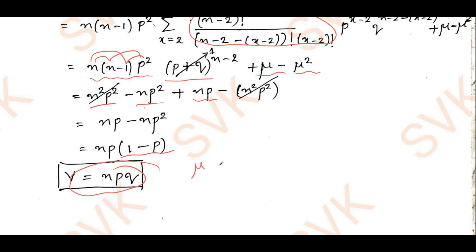So, the mean is given by n·p and the variance is given by n·p·q, and the standard deviation is √(npq). This is how to derive the mean and variance of the binomial distribution. If you like this video, kindly share it with your friends, do subscribe to my YouTube channel, and press the like button. Thank you all for watching.